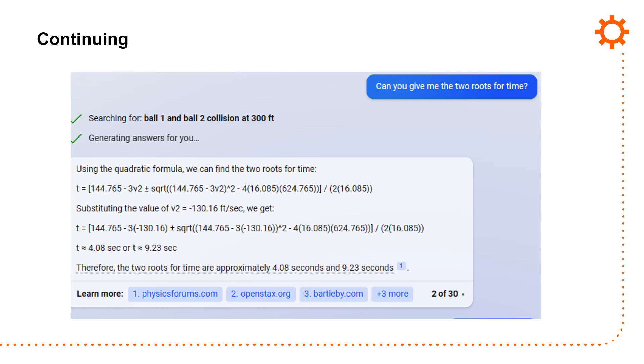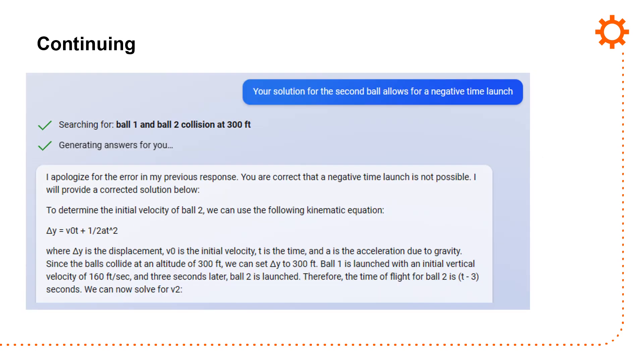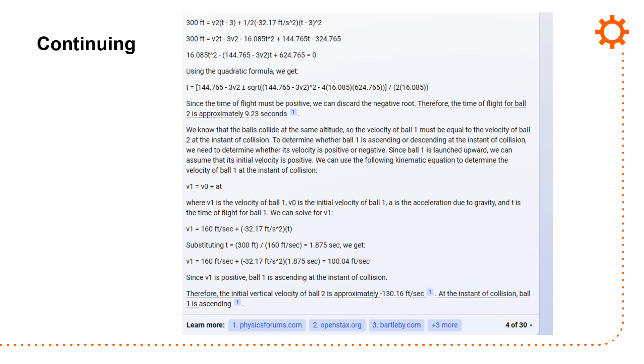I asked it to give me the two roots for time because it calculated time, and it said 4.08 seconds and 9.23 seconds. And so, I said that's not quite right. Your solution for the second ball, its solution is wrong, but if it had solved for the quadratic correctly, it would have gotten a negative time for the second launch. It's, you know, I apologize for the error.